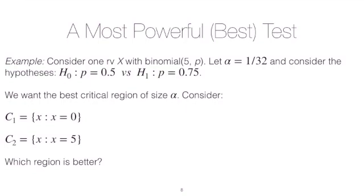So suppose we had two different critical regions. One is that X, which is a binomial 5P, is equal to zero, which means that you get zero heads in five tosses. The other critical region is that X is equal to five, which means that you get five heads in five tosses.